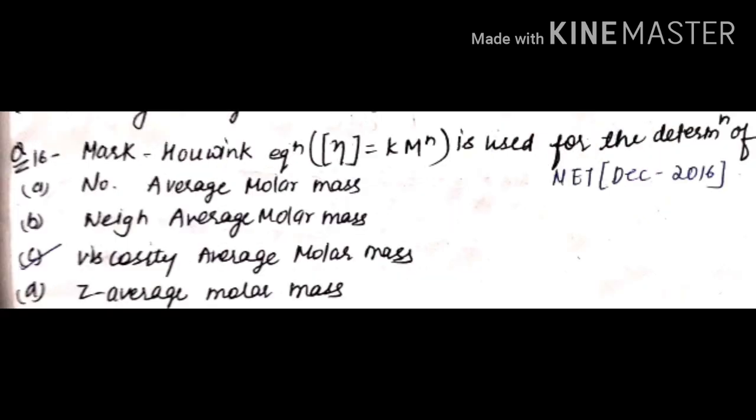This question was asked in December 2016. The Mark-Houwink equation η = K × M^a is used for the determination of what? I have told you that the Mark-Houwink equation is used to determine the viscosity average molar mass. So C will be the correct answer.